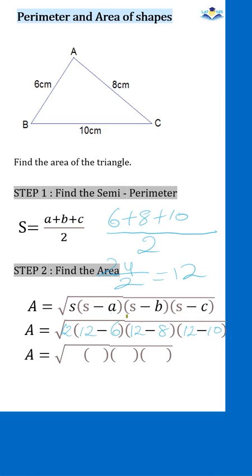Let's further simplify. The semi-perimeter multiplied by 12 take away 6 is 6. 12 take away 8 is 4. 12 take away 10 is 2. Let's further simplify this.